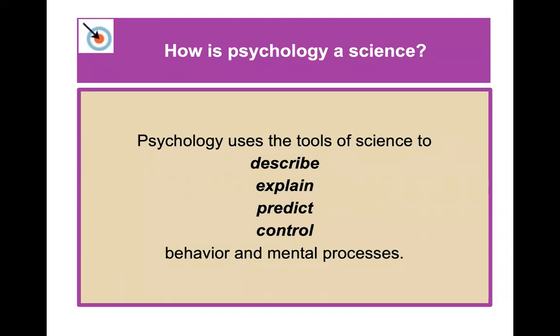How is psychology a science? It is a science because it utilizes the tools of science to understand behavior and mental processes. These tools include description, explanation, prediction, and especially control — things that are part of science and definitely very embedded within the field of psychology.